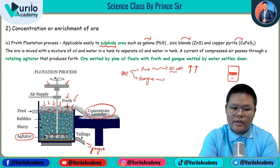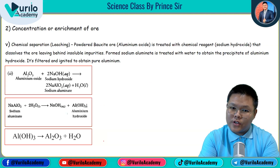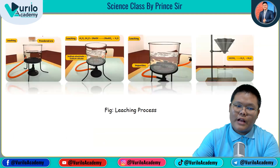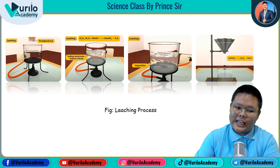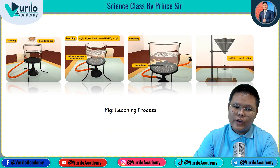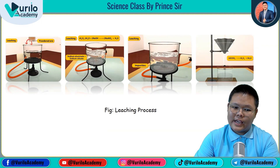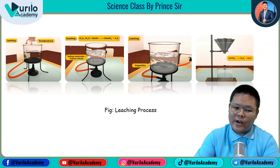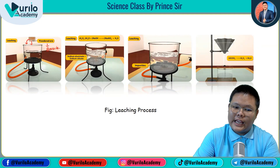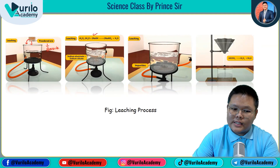Another important method is chemical separation or leaching. In leaching, a chemical is used — for example, sodium hydroxide (NaOH). The powder ore — generally bauxite — is mixed with sodium hydroxide solution, and heat is provided constantly.